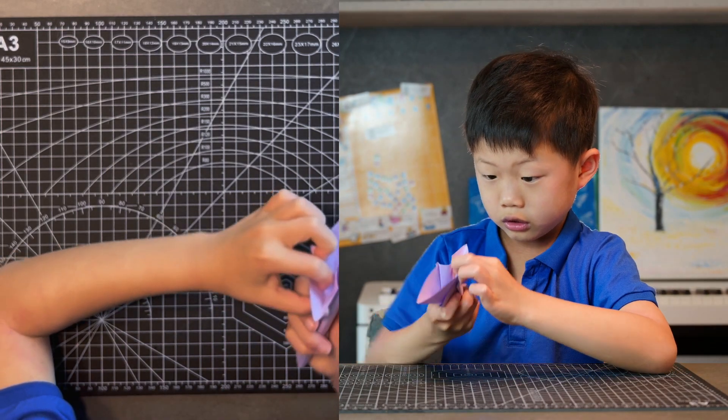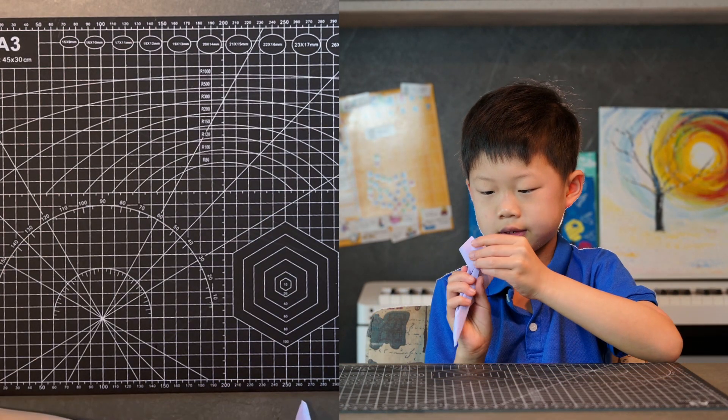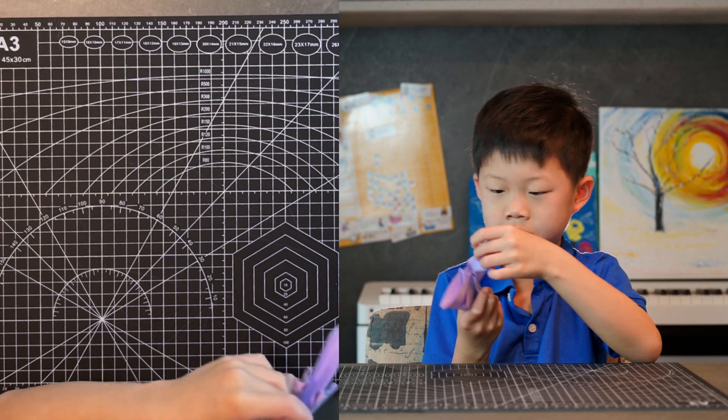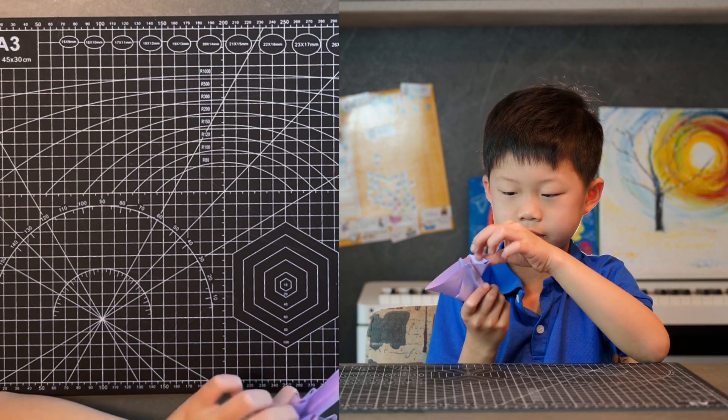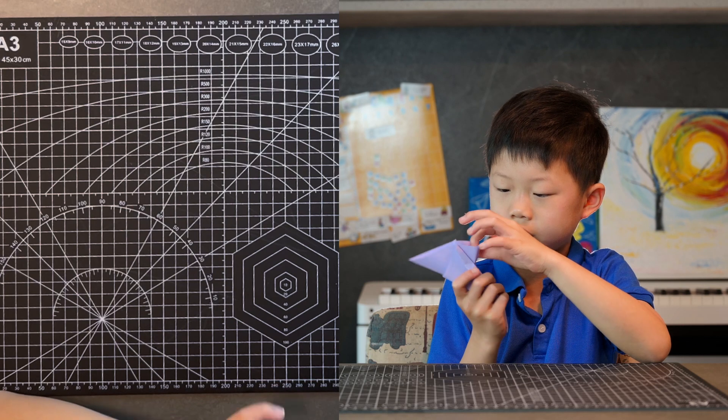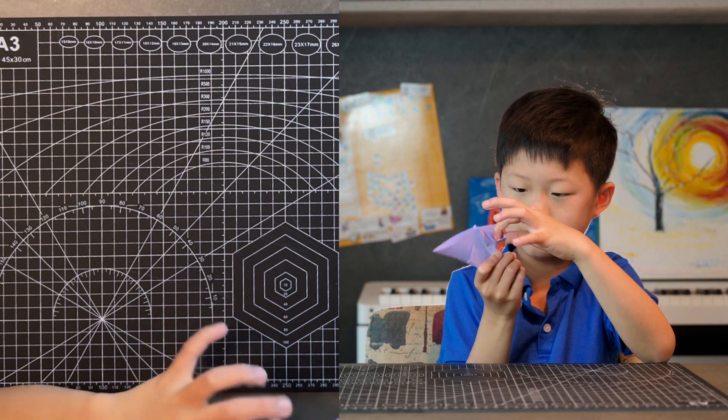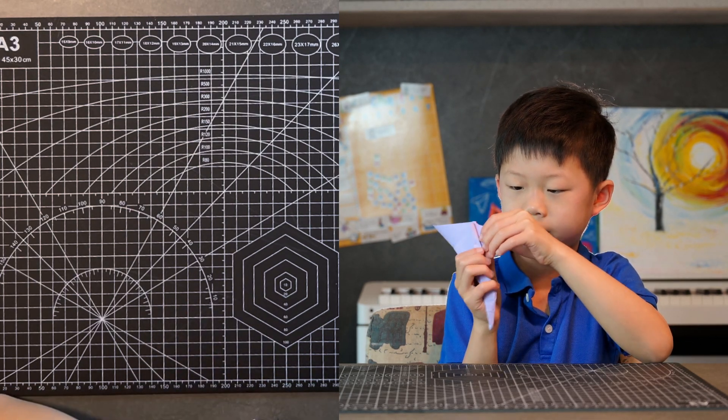And then fold it like this. You see it has a diamond and you're folding that diamond cell. Just flick it inside and then you've got that diamond cell already. Flick it inside.